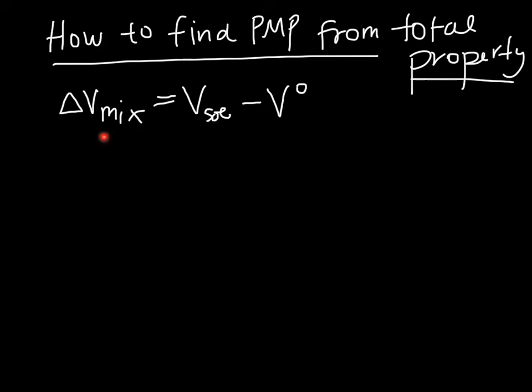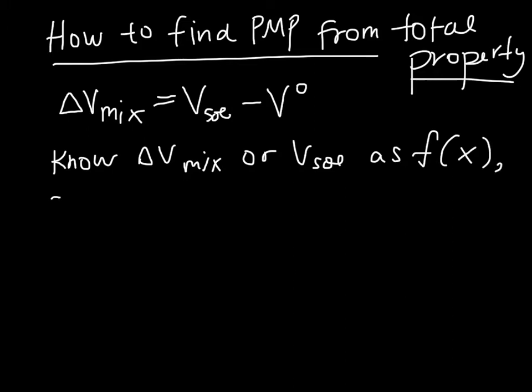So if we know delta V of mixing or delta V of the solution as a function of composition, so as a function of the composition of the system, then we can find the partial molar properties also as a function of composition.